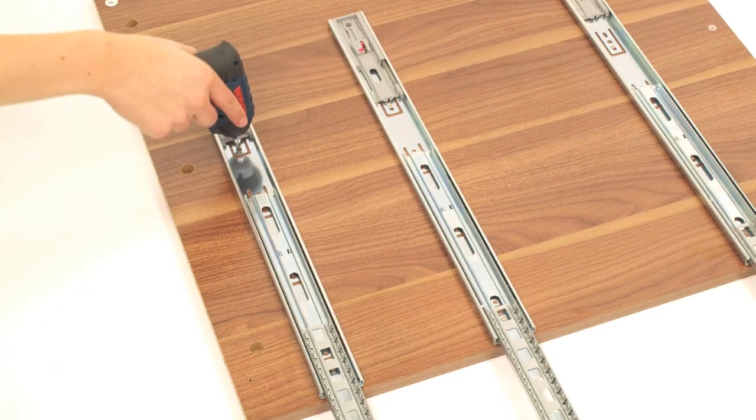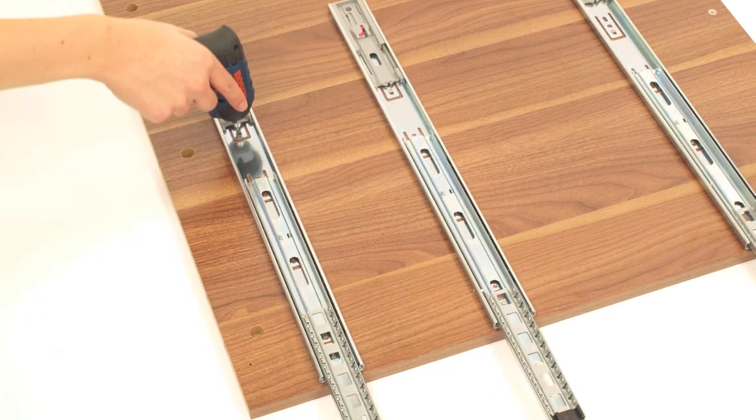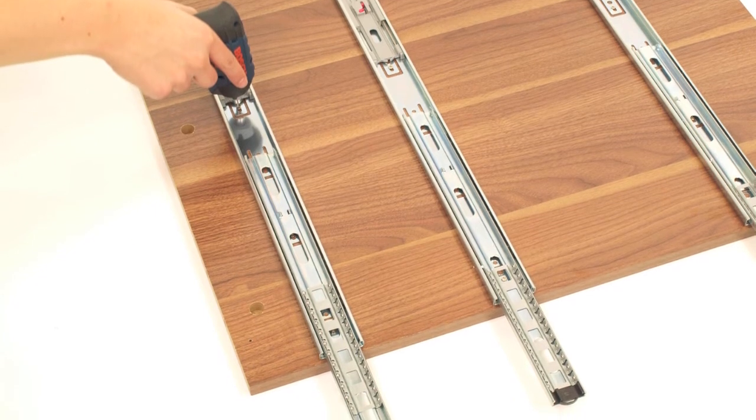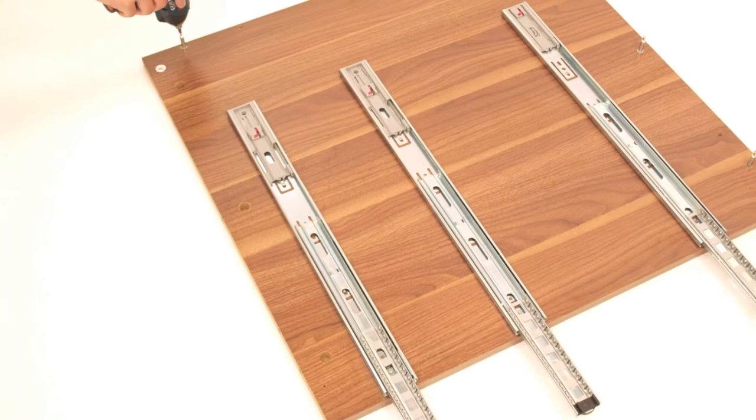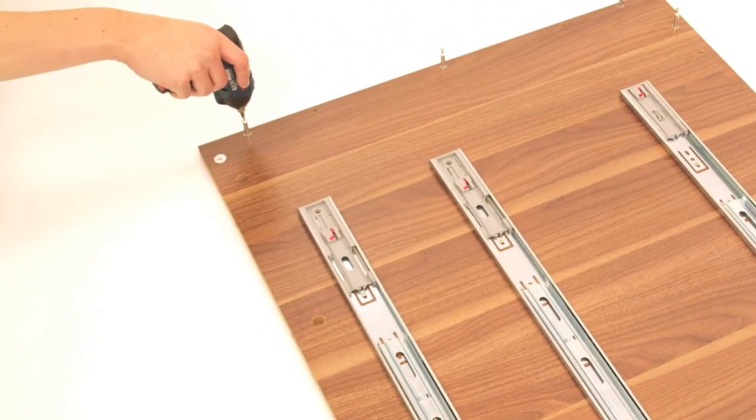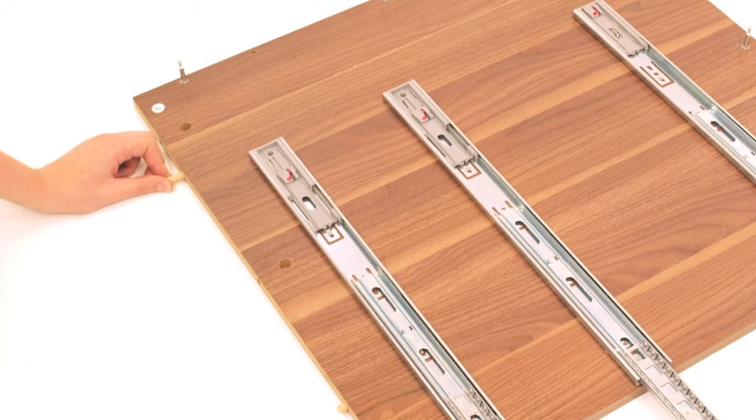Next, screw the remaining parts of the drawer runners onto the side panels labelled part F and G. The screws are labelled number 7. Screw 12 metal dowels into the side panels and insert four wooden dowels.